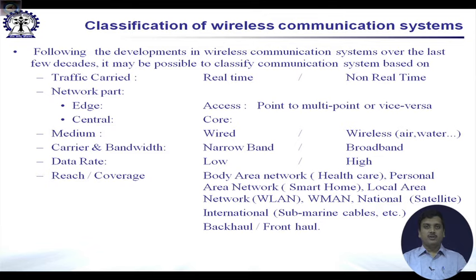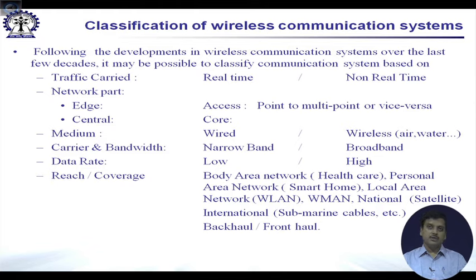One example is a body area network — within a small range, sensor nodes placed over a human body connect to one access node, typically a phone, which connects to the core network. Then there is personal area network with smart home or smart office examples. Beyond that is the wireless local area network, then metropolitan area network, then national grids covered by satellite links, and international links covered by submarine cables or satellite links.